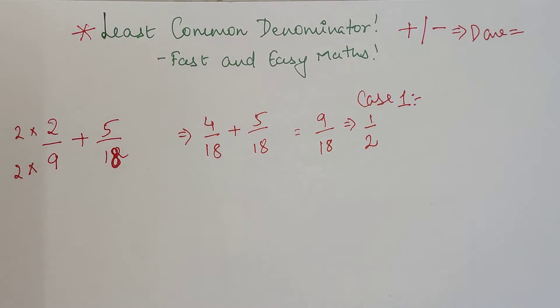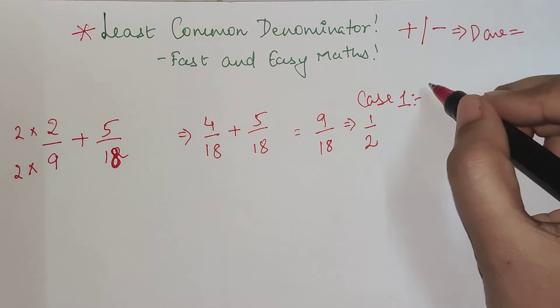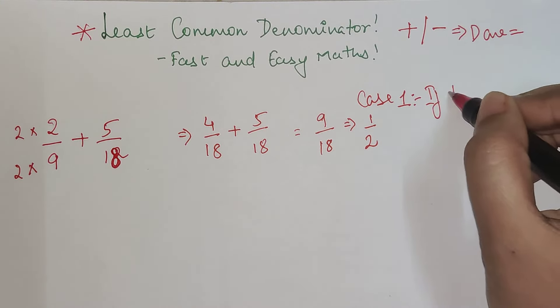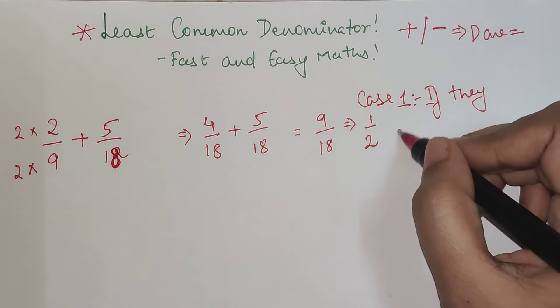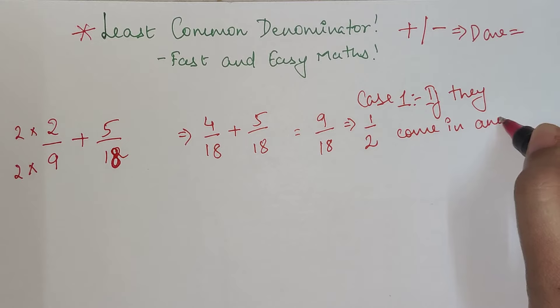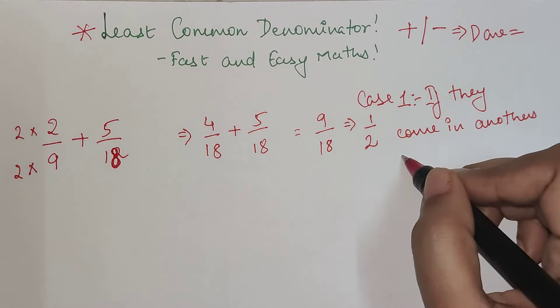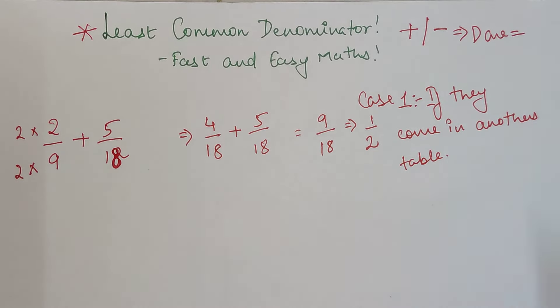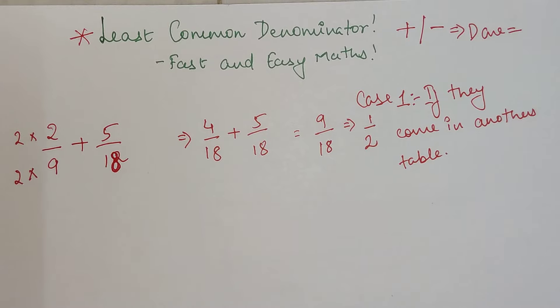This is the simplified form. So case 1 is if they come in another's table, then this is very simple. You do not have to go to the trouble of finding LCD.